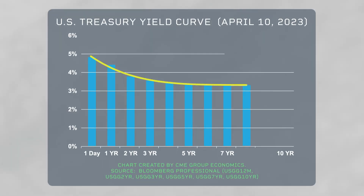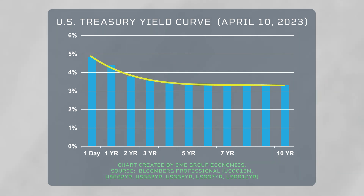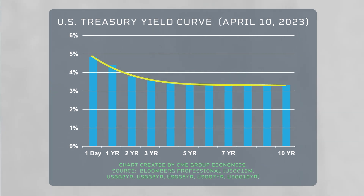The yield curve, with short-term rates higher than long-term yields, has been inverted since November 2022. An inverted yield curve is a reliable indicator of a restrictive policy by virtue of its track record of anticipating past recessions.